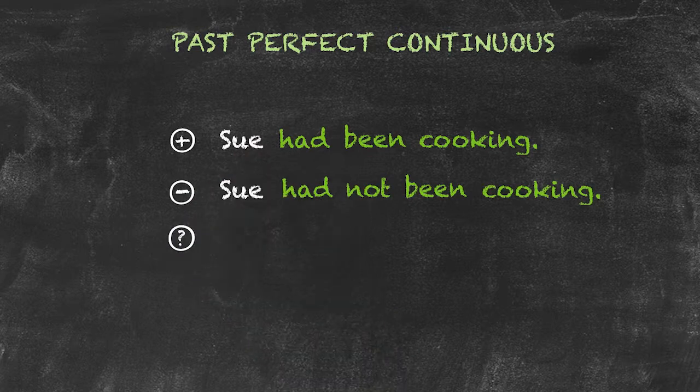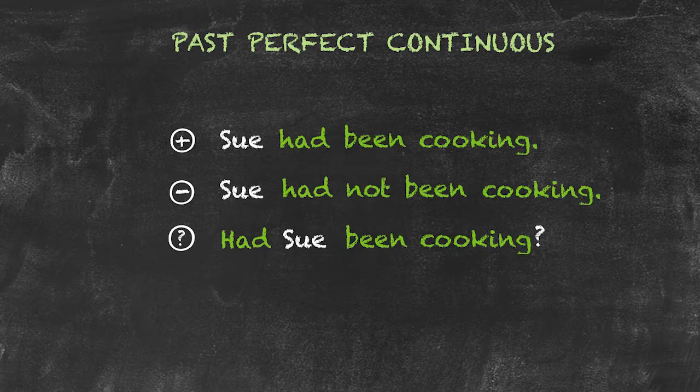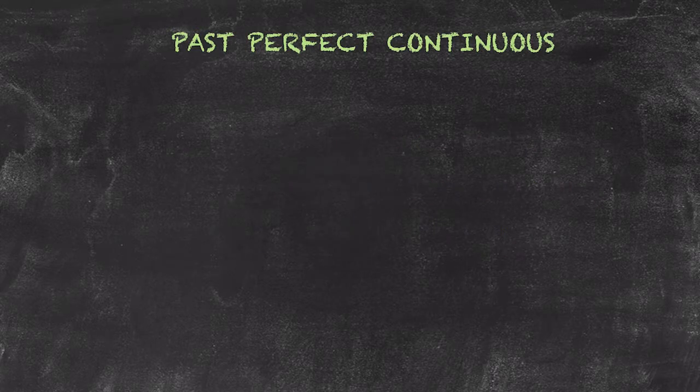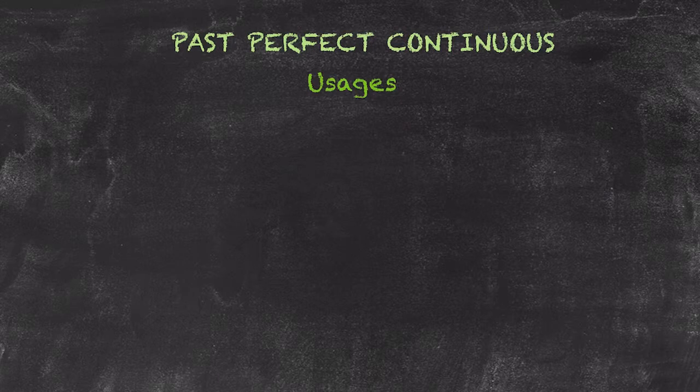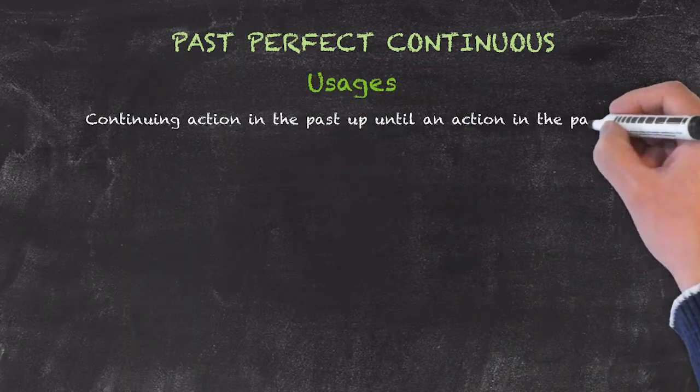And now the usage for the past perfect continuous tense. It is as follows: using it to communicate a continuing action in the past up until an additional action in the past.